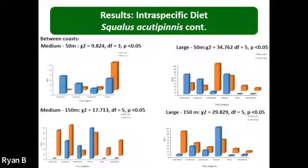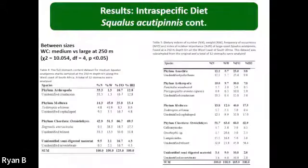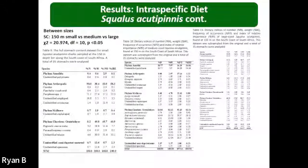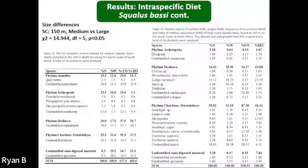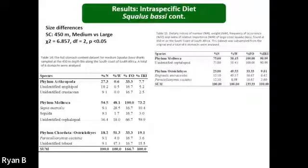Similar patterns were evident for Squalus blainvillei. In terms of interspecific distributions, there was overlap at intermediate depths and significant differences in the size of overlapping species at certain depths on each coast. Interspecific density differences by depth were also evident as revealed by the Kruskal-Wallis tests. In terms of diet of Squalus acanthias, differences were evident between coast, depth, and size classes. Teleosts, cephalopods, crustaceans, and polychaetes were important prey categories, with the degree of importance changing with coast, depth, and size class. In terms of the diet of Squalus blainvillei, significant differences were evident by depth and size class, with teleosts, cephalopods, and crustaceans being the most important prey categories.